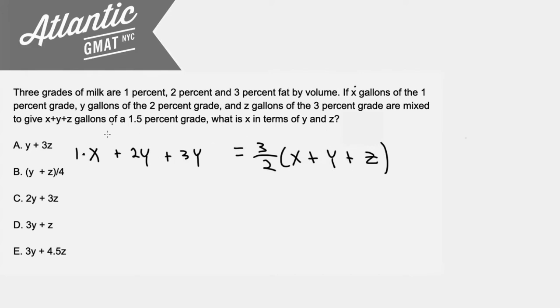And you could also look at each variable being the weighting. So 1% is weighted at x gallons, 2% is weighted at y gallons, and 3% is weighted at z gallons.